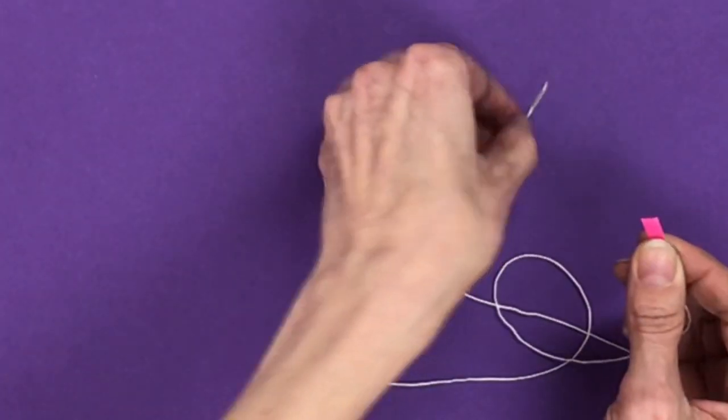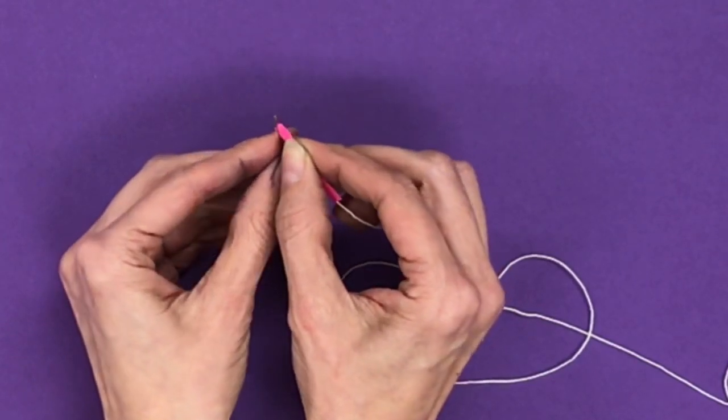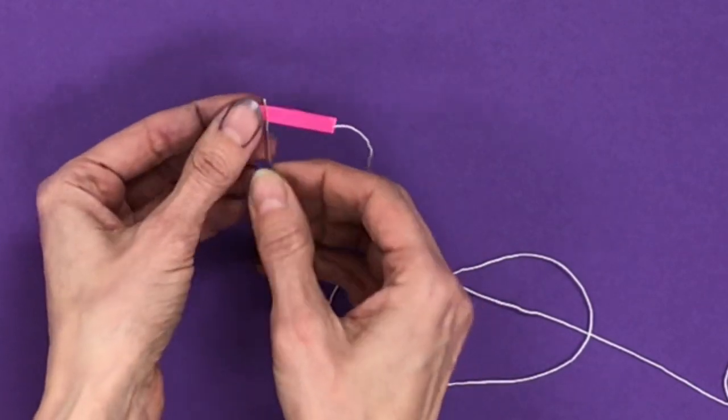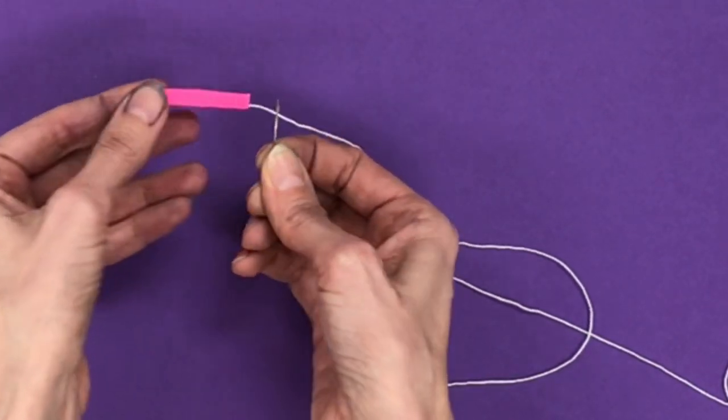Next, place that folded piece of paper or hot dog bun inside the eye of the needle. Keep it pinched as you pull it all the way through. Take the paper off and now your needle is threaded.